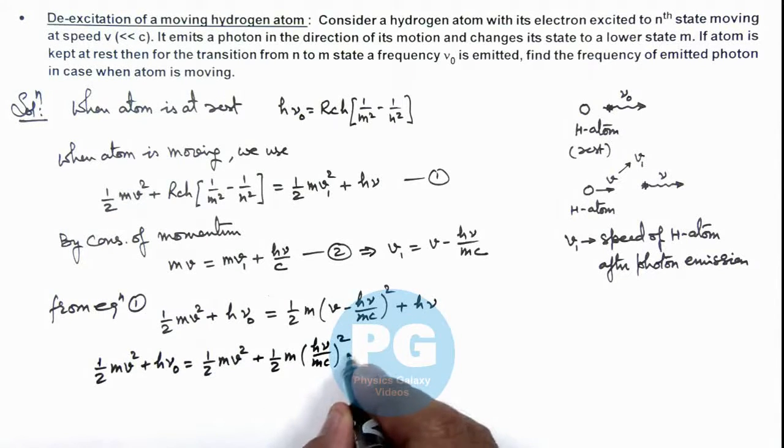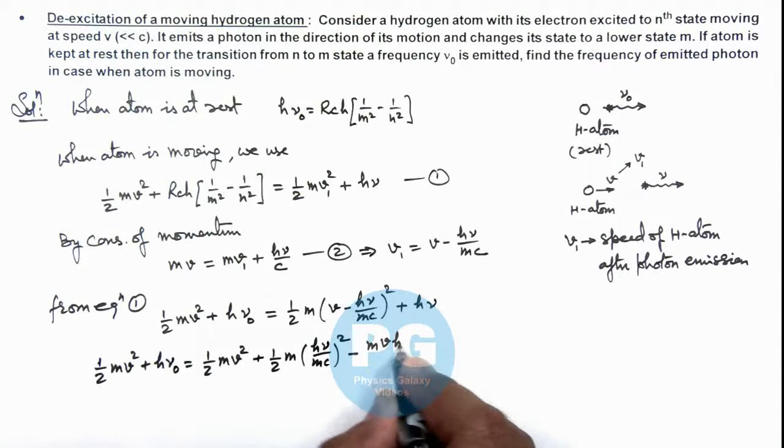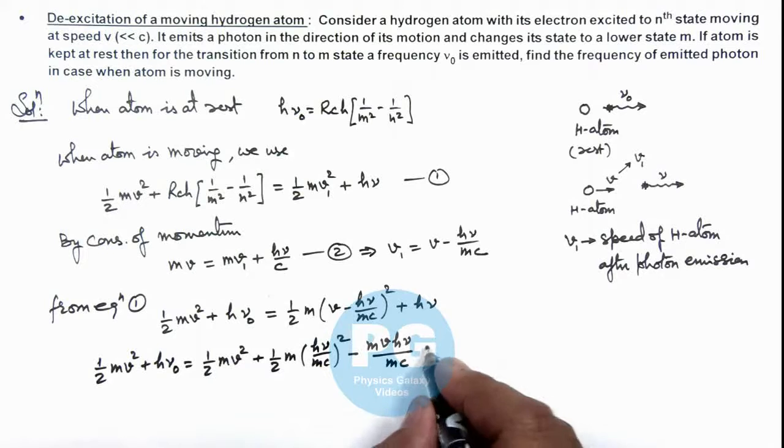Plus (1/2)m, this is (h*nu)/(m*c) whole square, minus this will be m*v*h*nu/(m*c) plus h*nu.